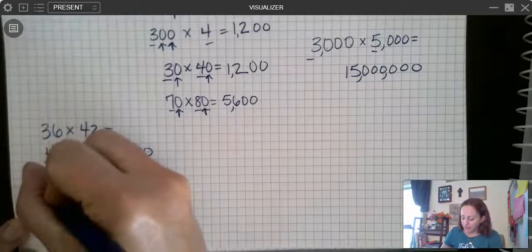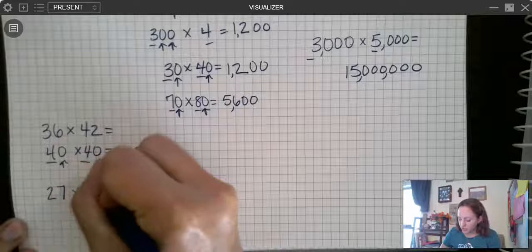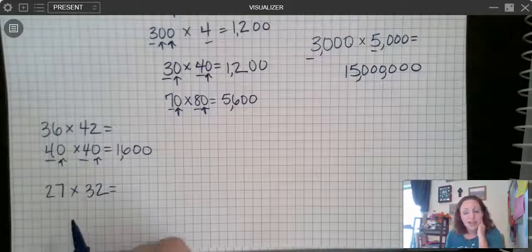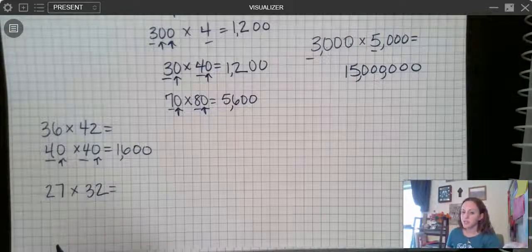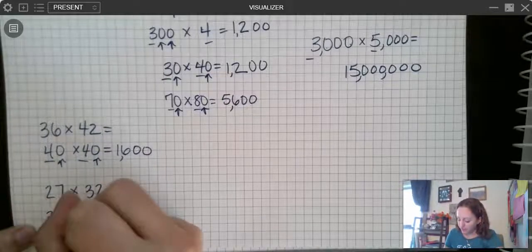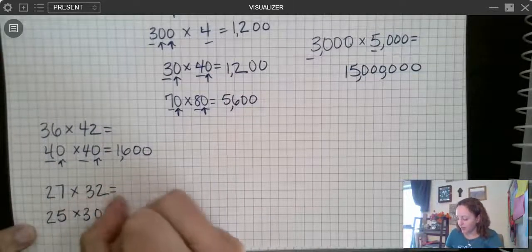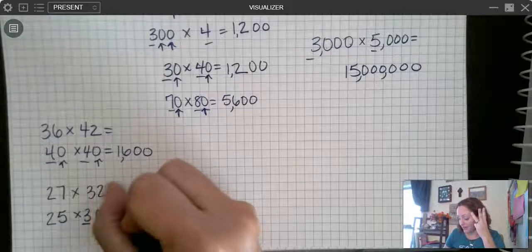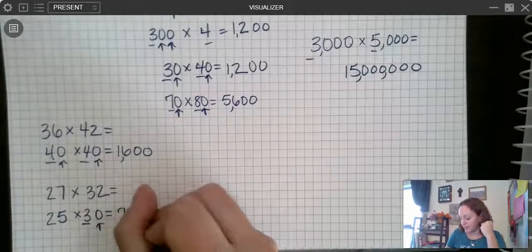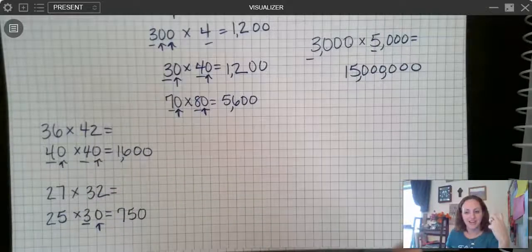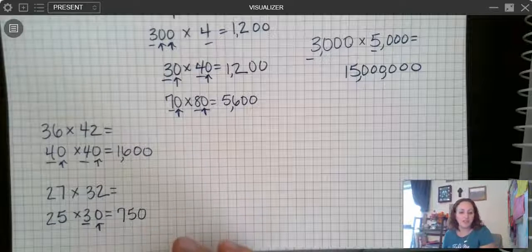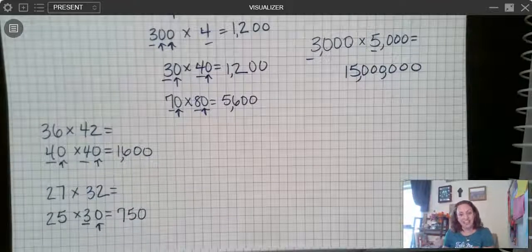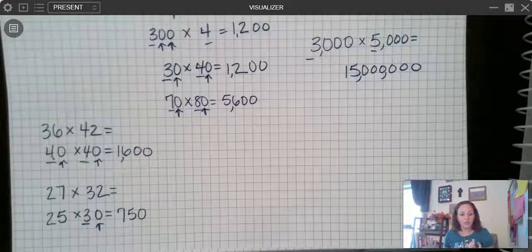So let's say I have 27 times 32. Well 27 I could round to 30 but I could also round it to 25 and 25 is a little bit closer than 30. So I could round this to 25 and I could round 32 to 30 and then I'm doing 25 times 3, which is 25, 50, 75, and then I add on my 0 at the end. 750, about right? We're estimating so this is about how much. 750 would be a little bit closer to the actual answer than if I were to do 30 times 30.